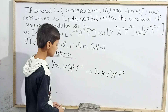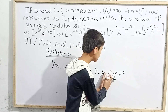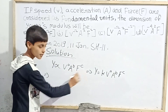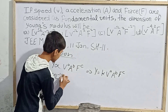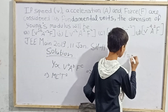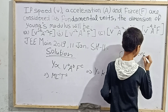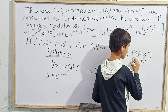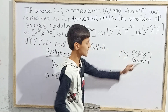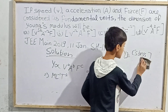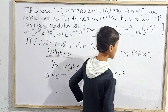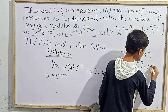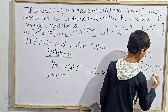We need the dimensional formula for Young's modulus, which is ML⁻¹T⁻². This comes from Young's modulus being stress divided by strain. Strain is dimensionless, so we only need the dimensions of stress. Stress is force per area, so its dimensional formula is ML T⁻² divided by L², giving ML⁻¹T⁻².